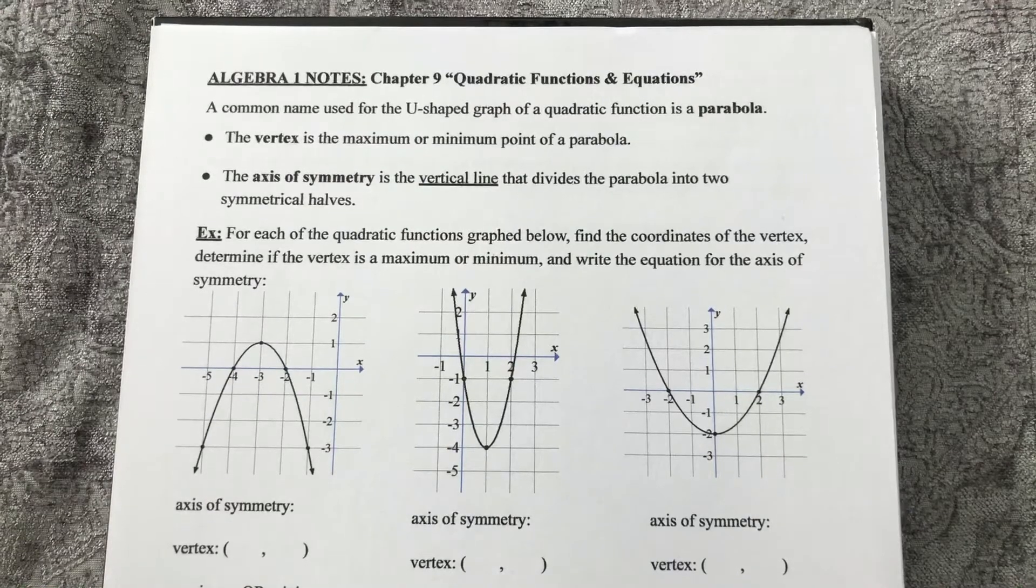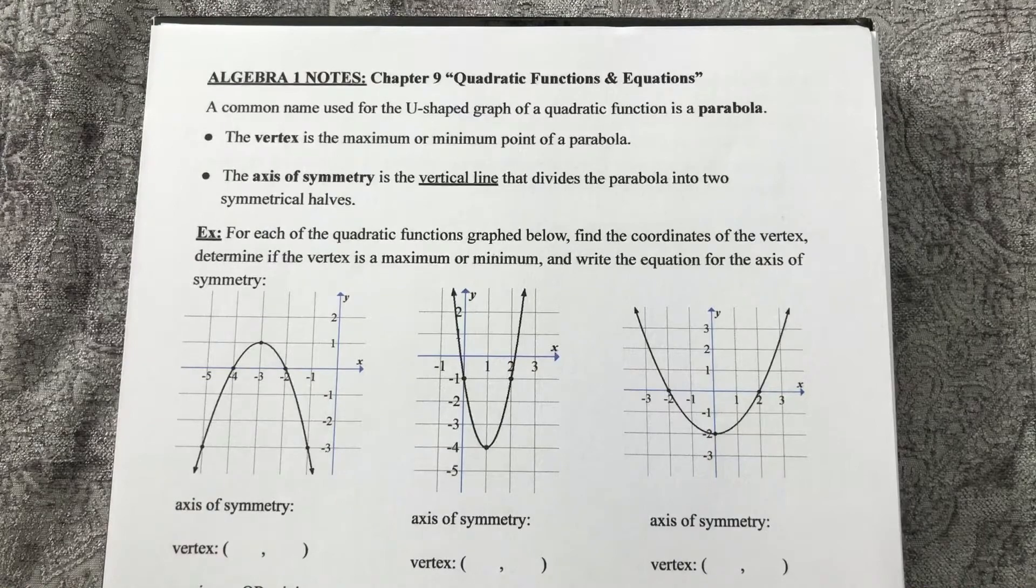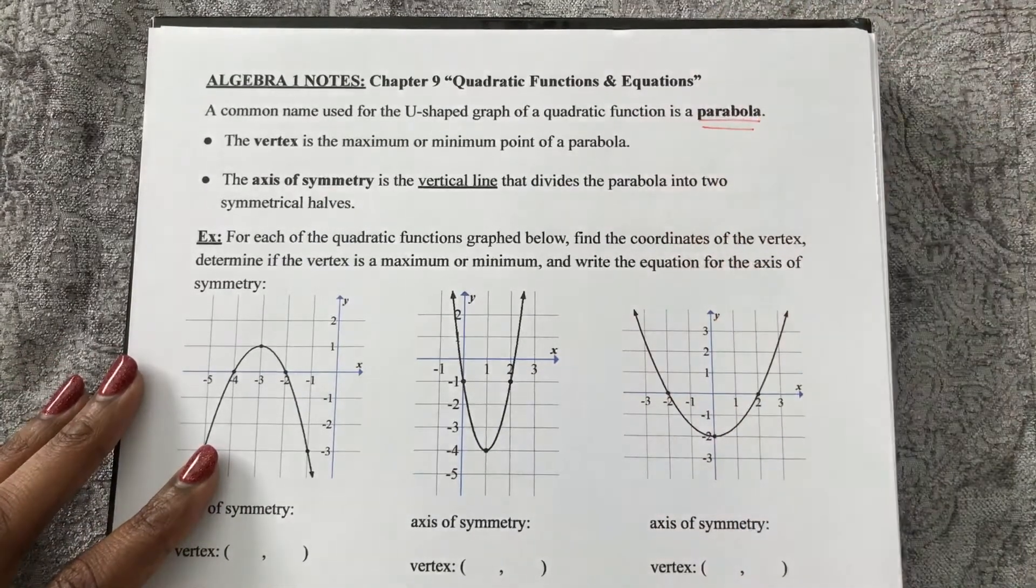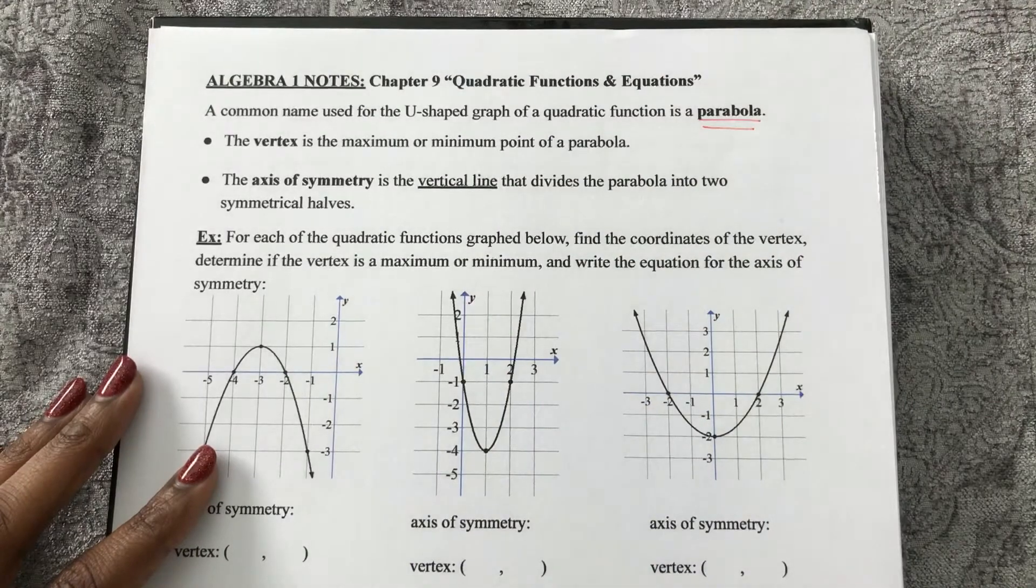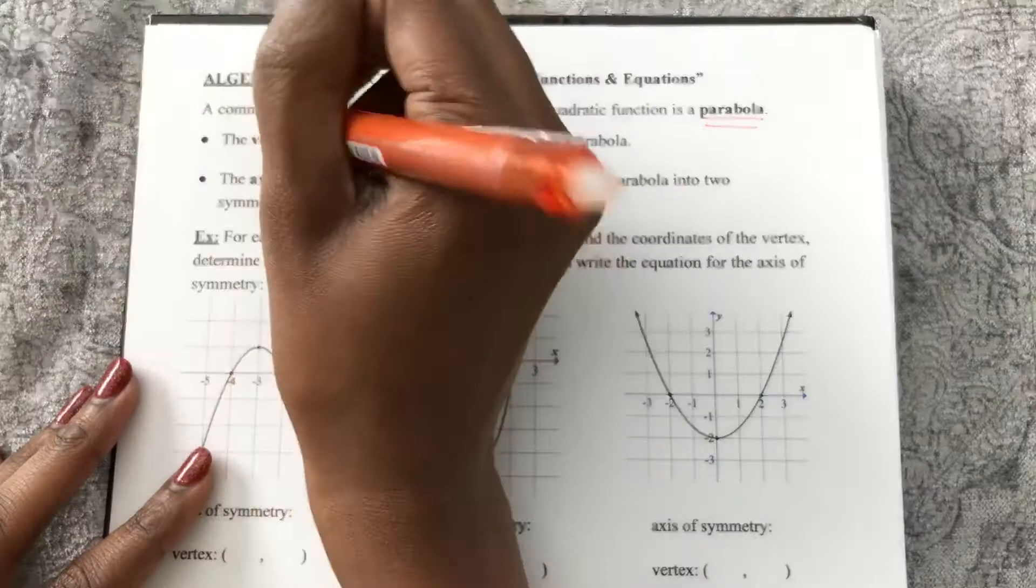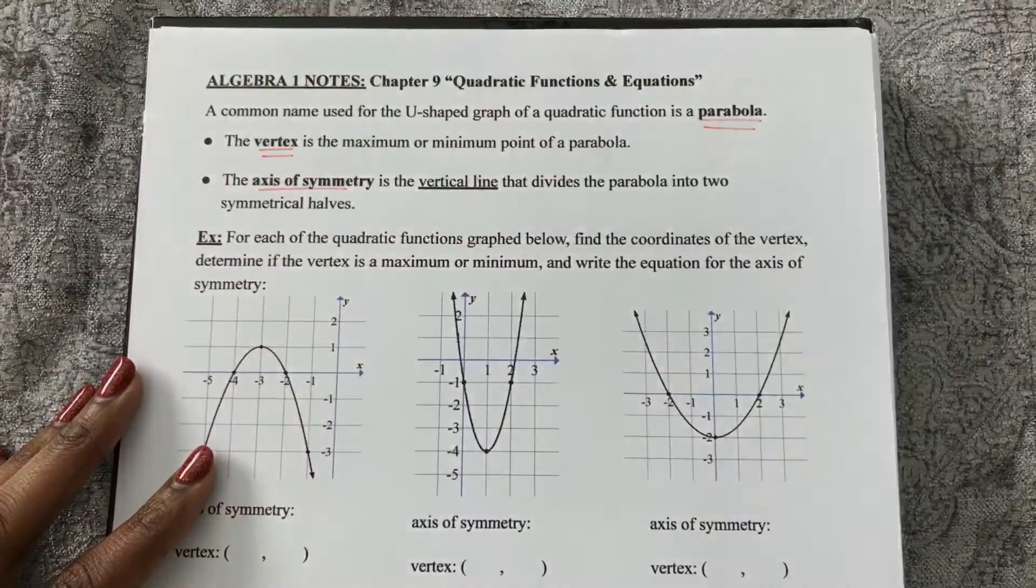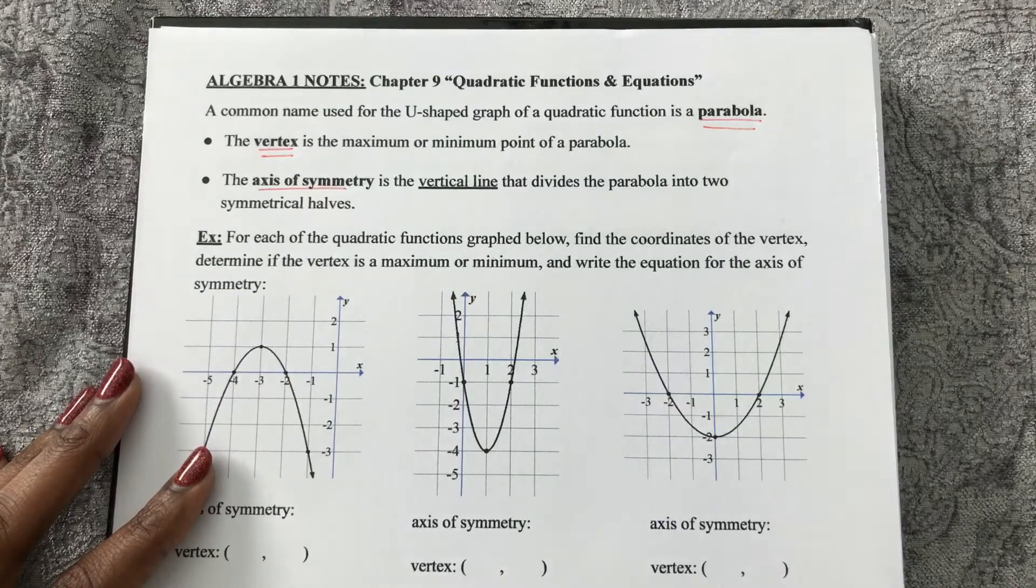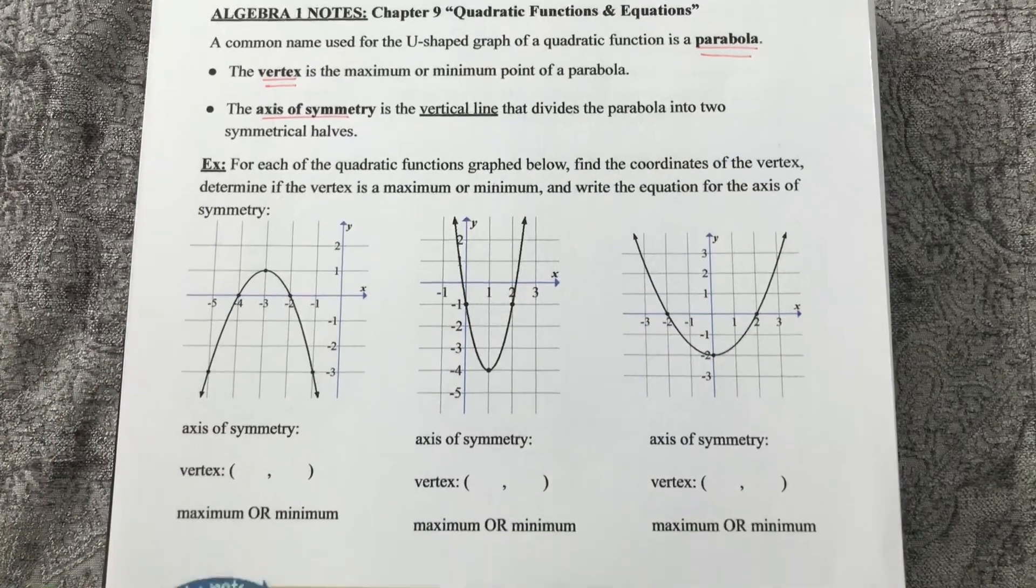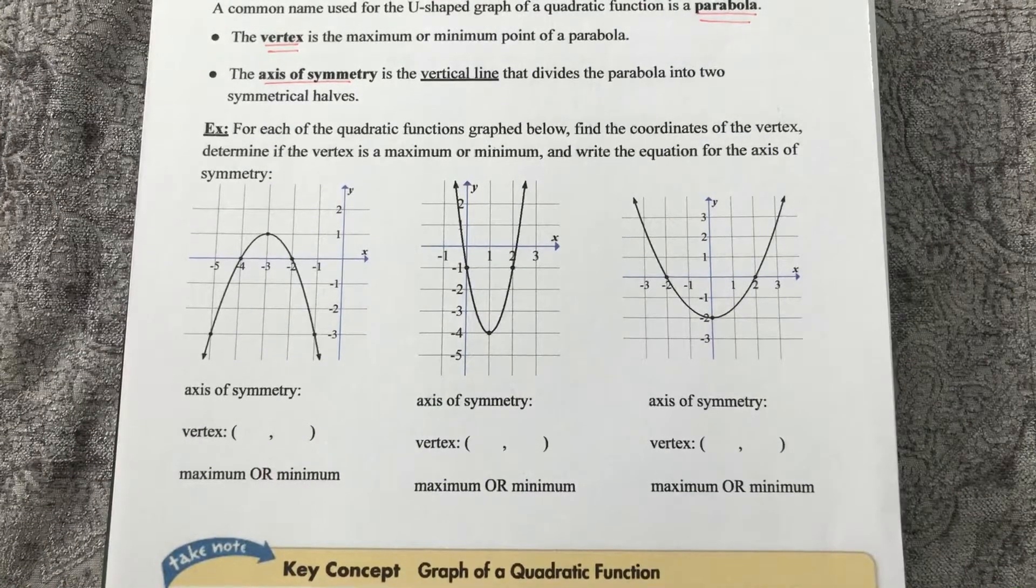So let's get into some vocabulary. The common name for that U-shaped graph of a quadratic function is called a parabola. The vertex is the maximum or minimum point of a parabola, and the axis of symmetry is a vertical line that divides the parabola into two symmetrical halves. So here we have three quadratic functions graphed.